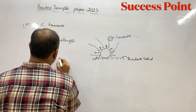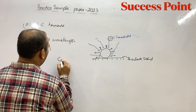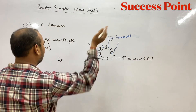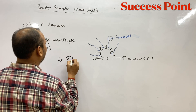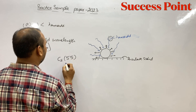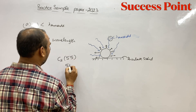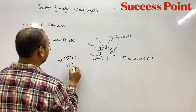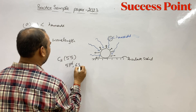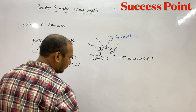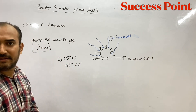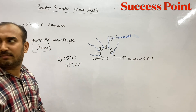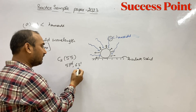Cesium की अगर आप बात कीजिए, तो इसका atomic number कितना होता है? 55। इसका configuration कितना होता है? 5P6, 6S1। इसका मतलब इसके valence shell में कितने electrons हैं? 1।